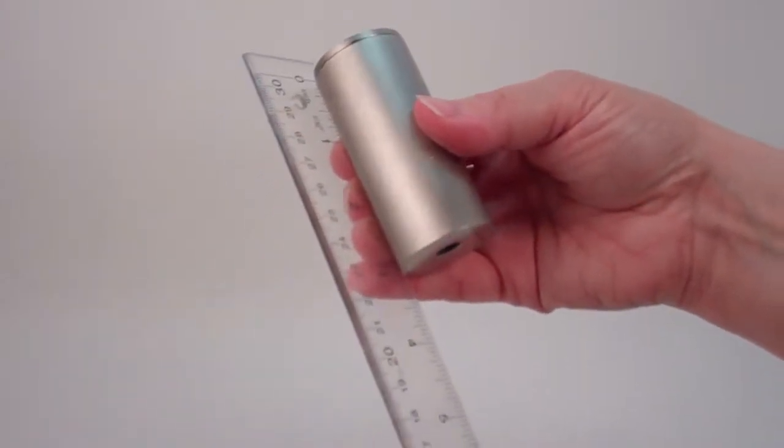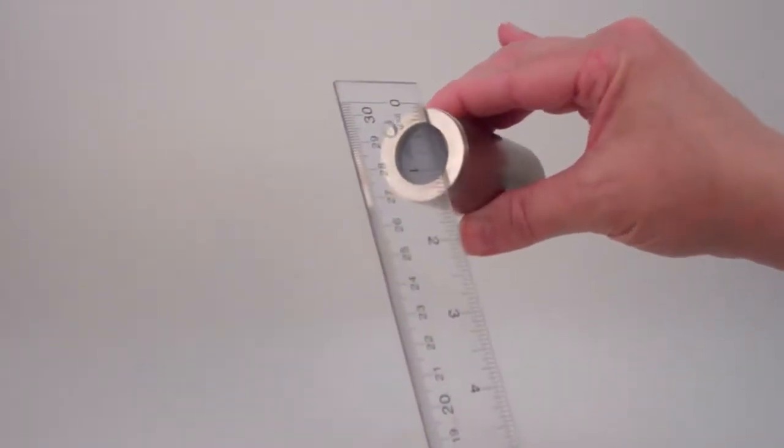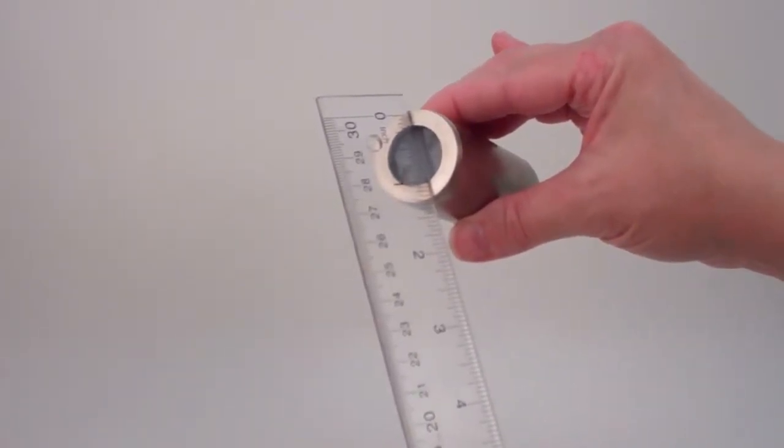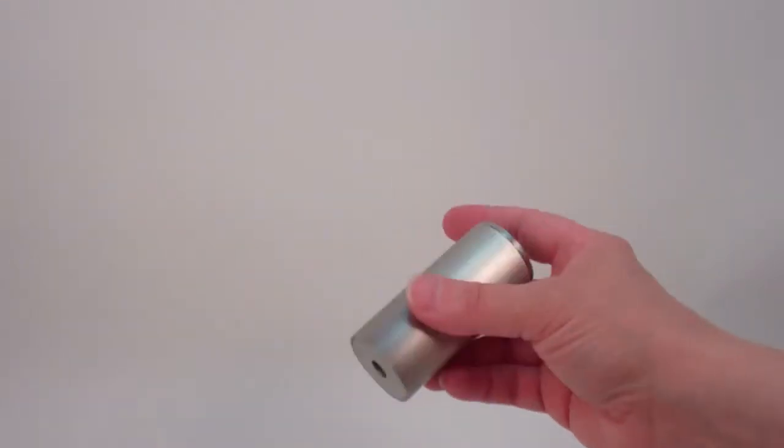The overall height of the entire kaleidoscope is just over three inches and its diameter is an inch and a quarter, and the diameter of the eyepiece is a quarter of an inch.